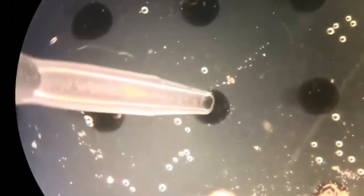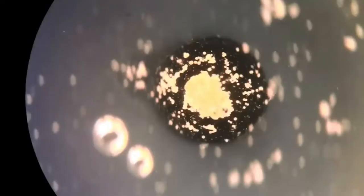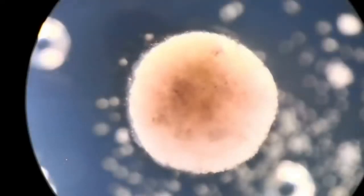These early Xenobots were less than 1mm wide, with the skin cells providing rigid support and the heart cells acting like small motors, contracting and expanding in volume to move the Xenobot about.